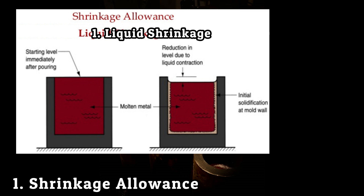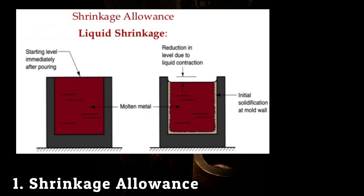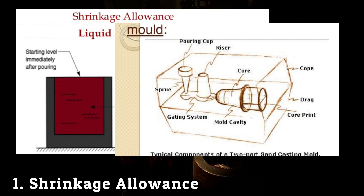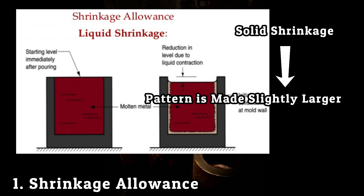There are three types of shrinkage: liquid shrinkage, solidification shrinkage, and solid shrinkage. Liquid shrinkage and solidification shrinkage are compensated by a suitable riser, but solid shrinkage is not compensated by it, so the pattern is made slightly larger to compensate. This is known as shrinkage allowance.